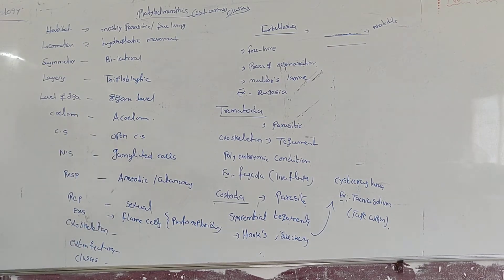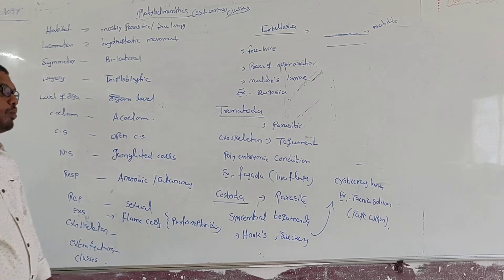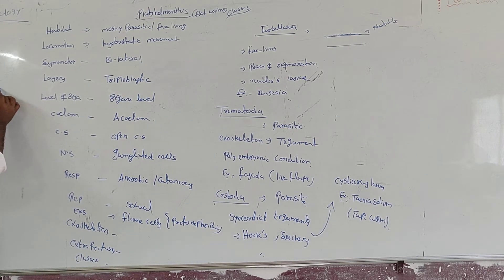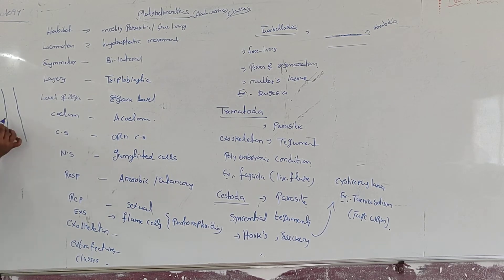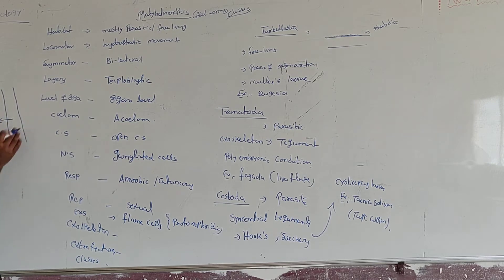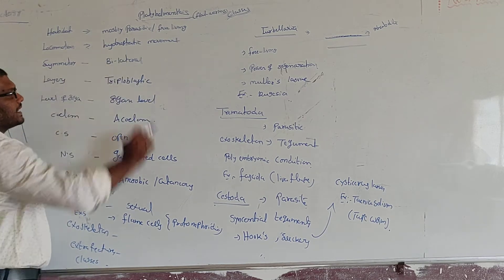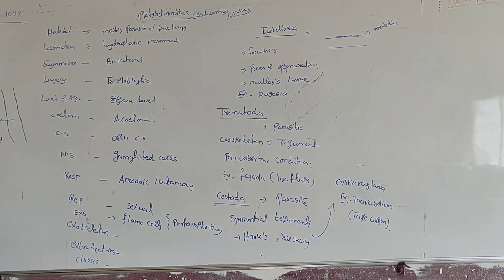Now if we go for locomotion — what type of movement — it is hydrostatic movement. The organism has a body fluid inside. This body fluid is pushed back and the organism moves forward. While using this movement, the organism can move forward. That type of movement is called hydrostatic movement.